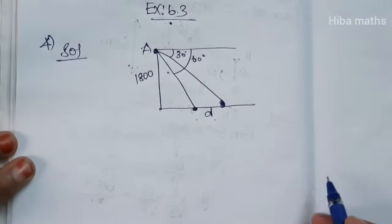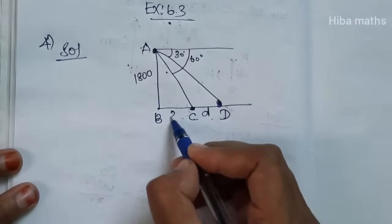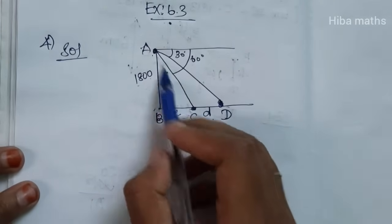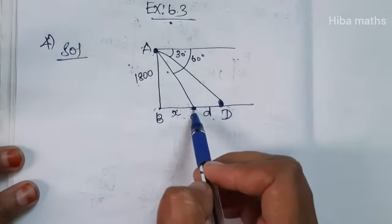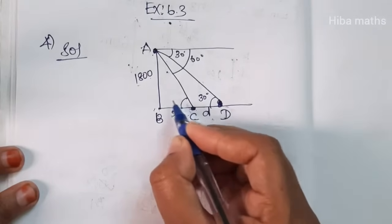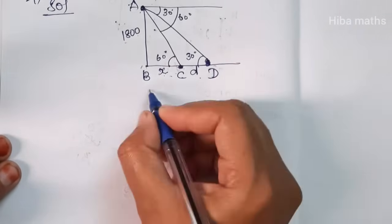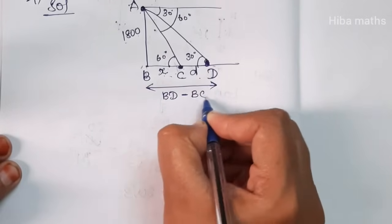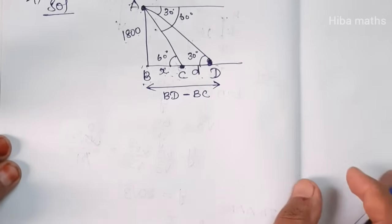Let me label the points: this is A, B, C, D. We need to find the distance between the two boats, which is BD. The full distance BD will be BC plus CD. An aeroplane is 1800 meters altitude. First boat is 30 degrees and the second boat is 60 degrees.